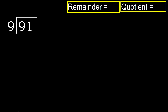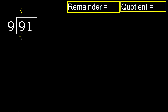91 divided by 9. 9 is not less, therefore start with 9. 9 multiplied by which number is nearest to 9 but not greater? 9 multiplied by 2 is 18 — 18 is greater. Multiplied by 1 is 9, which is not greater, ok.